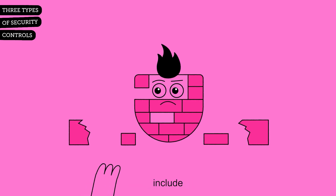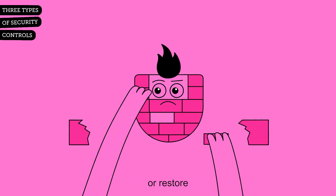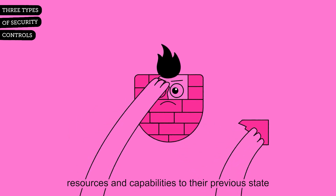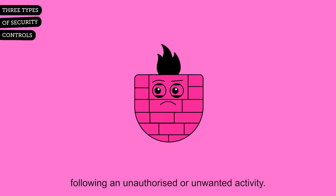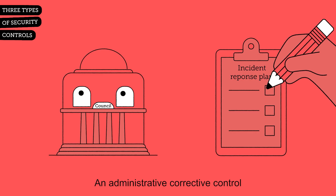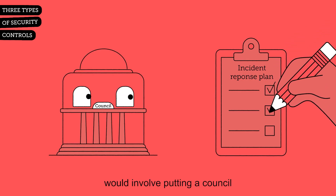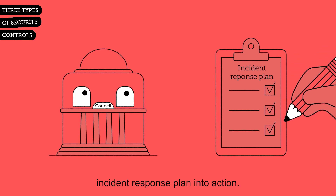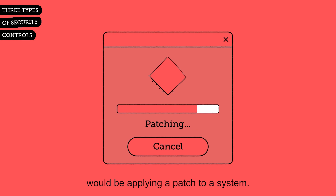Corrective controls include any actions taken to repair damage or restore resources and capabilities to their previous state following an unauthorized or unwanted activity. An administrative corrective control would involve putting a council incident response plan into action. A technical corrective control would be applying a patch to a system.